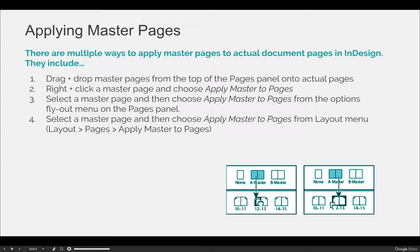You can also select a master page from the top part of your pages panel and in the top right-hand corner there's an options flyout menu — it's a little button that has three to four horizontal lines. When you hit the flyout menu, you will also see the apply master to pages option.